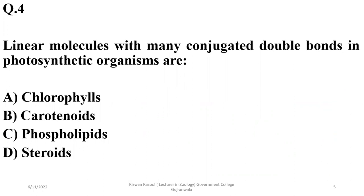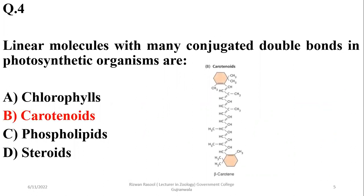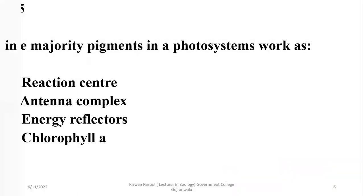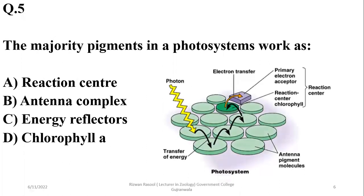Question four: Linear molecules with many conjugated double bonds in photosynthetic organisms are basically carotenoids, so beta is the right option. Chlorophyll, steroids, and phospholipids have multiple ring structures. Question five: The majority of pigments in a photosystem work as an antenna complex for capturing light energy, so beta is the right option.